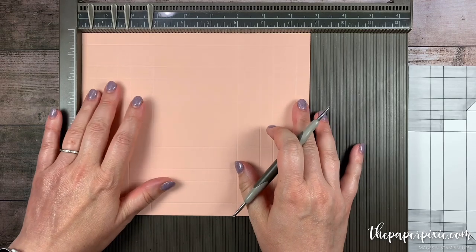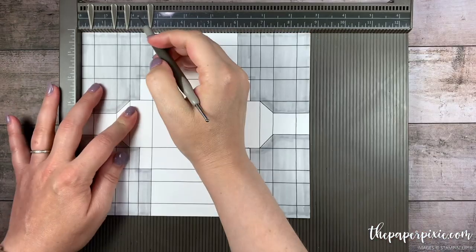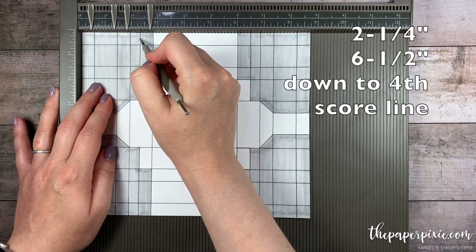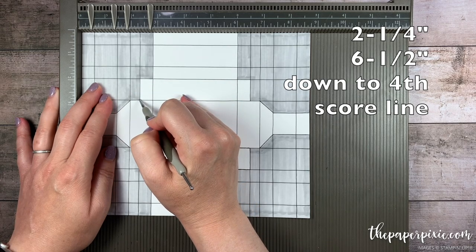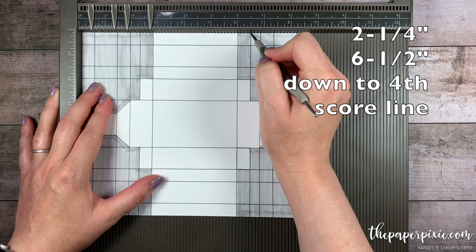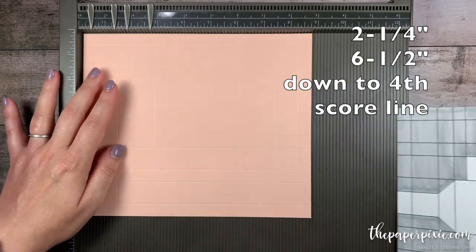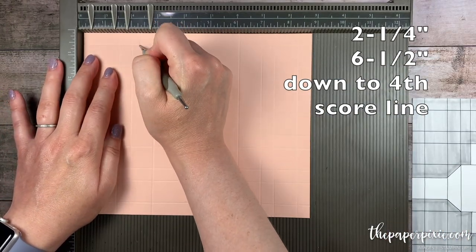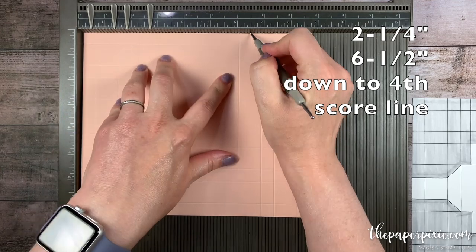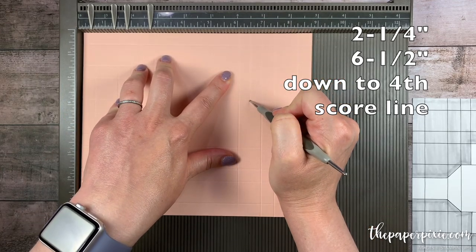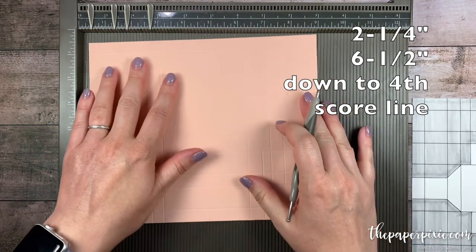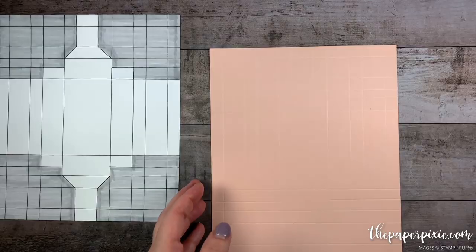Then on the long side, or the 8 3/4 inch side, we're going to score this at 2 1/4 down to the fourth horizontal score line, and 6 1/2. So 2 1/4, going down 4 score lines, 6 1/2, 4 score lines. Then I'm going to rotate it 180 and repeat.